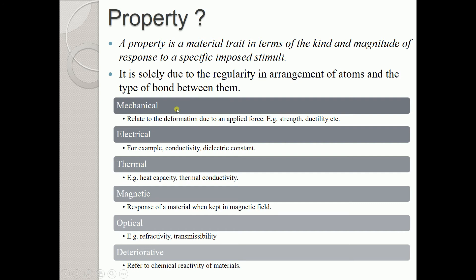We have different types of properties. First, mechanical property, which relates to deformation due to an applied force — such as strength and ductility. Second, electrical property, like conductivity or dielectric constant. Third, thermal property, such as heat capacity or thermal conductivity. Fourth, magnetic property — the response of a material when placed in a magnetic field. Fifth, optical property — refractivity, reflectivity, or transmissibility. Sixth, deteriorative property, which refers to the chemical reactivity of materials.